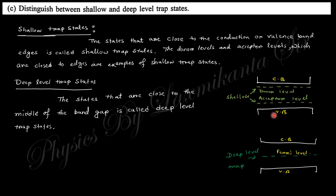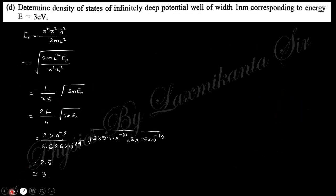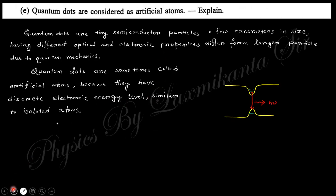Next question: Determine the density of states of infinitely deep potential well with 1 nanometer width corresponding to energy 3 eV. If you apply the energy expression for the deep potential well, you will obtain this value of n. But I do not understand what density of state we need to find out. If anyone can solve this problem, please comment.